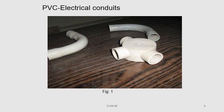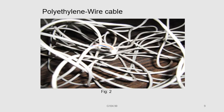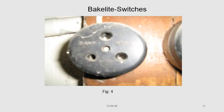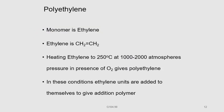Observe the diagrams one by one. These are PVC (polyvinyl chloride) plastics used as electrical conduits. Next, this is a polyethylene wire cable — the cable is made from polyethylene plastic. This is a plastic bag, also prepared from polyethylene. These are switches prepared by bakelite. All these articles are prepared by plastics. Now, we discuss the preparation and uses of some plastics.